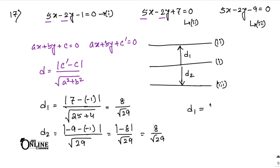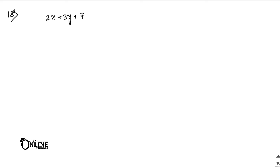Since d1 equals d2, equation number 1 is mid-parallel between the two given lines — proved. Sum number 18: find the equation of the line midway between the lines 2x plus 3y plus 7 = 0 and 2x plus 3y plus 5 = 0.